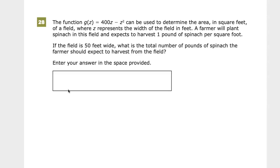where z represents the width of the field in feet. So we have a rectangular field, we're assuming, because they're going to give it to you in square feet. A farmer will plant spinach in the field and expects to harvest one pound of spinach per square foot. If the field is 50 feet wide, what is the total number of pounds of spinach the farmer should expect to harvest from the field?